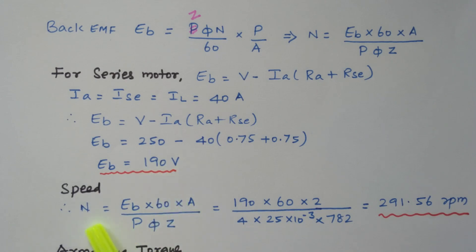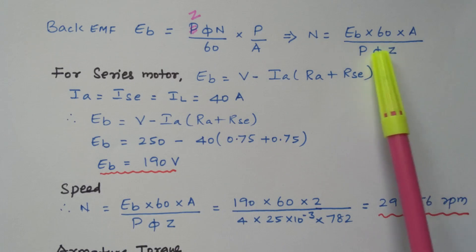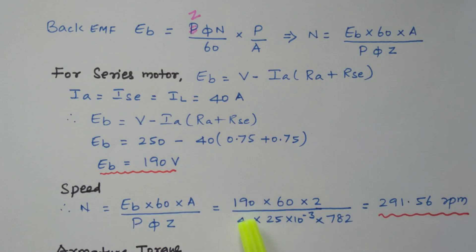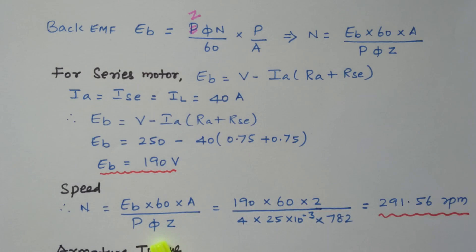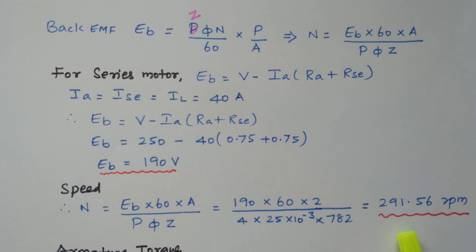With the back EMF of 190 V, we can now find the speed using the rearranged equation: N = (EB × 60 × A) / (φ × Z × P) = (190 × 60 × 2) / (25 × 10⁻³ × 782 × 4). By simplifying this expression, the speed of the DC motor is 291.56 RPM.